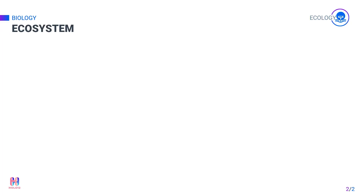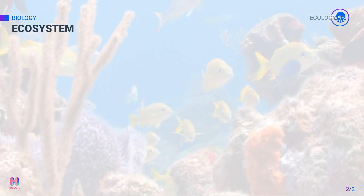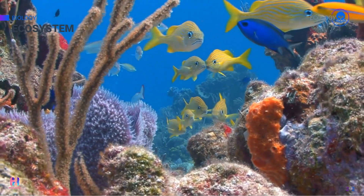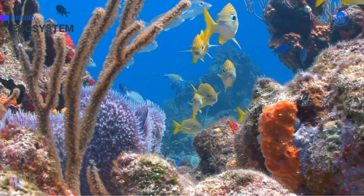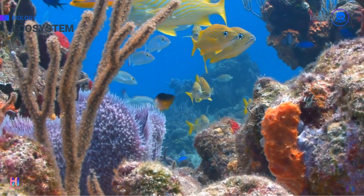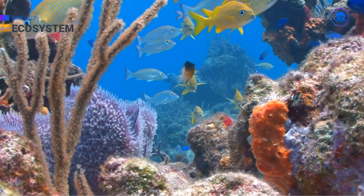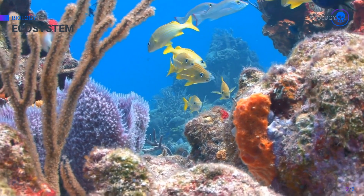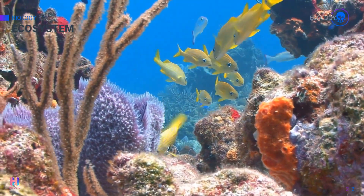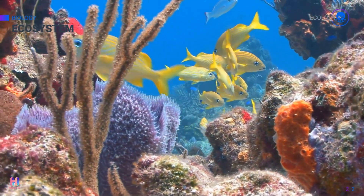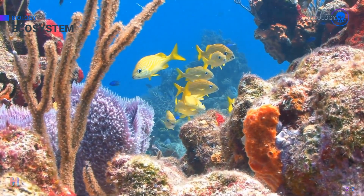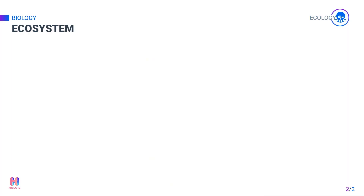Ecosystem. We have already seen that an ecosystem consists of organisms of a community and the non-living factors of their environment. An ecosystem is basically the interactions between the community and these non-living factors.